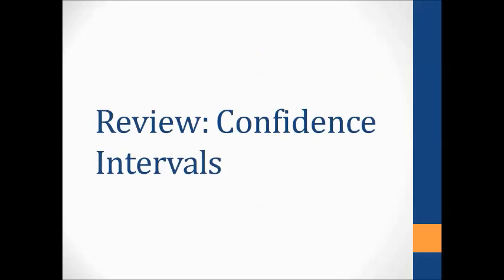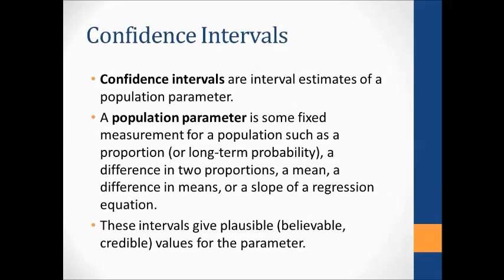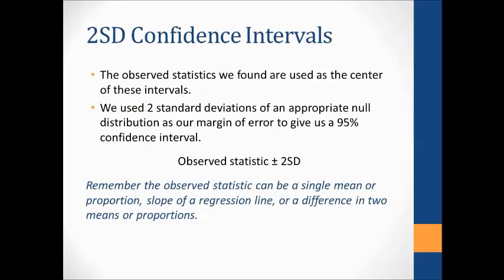Here's a review of confidence intervals. Tests of significance answer yes-or-no questions — like, is there strong evidence that Buzz is not just guessing, or that swimming with dolphins helps reduce depression symptoms? But sometimes we want to estimate a population parameter, such as what proportion of voters are likely to vote in the next election. A confidence interval does just that — it's an interval estimate for the population parameter. A population parameter is some fixed measurement for a population, such as a proportion, difference in proportions, a mean, difference in means, or the slope of a regression equation.